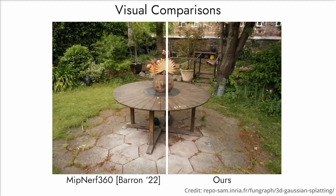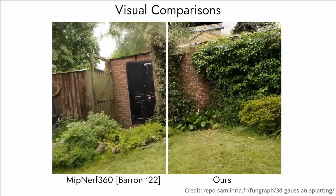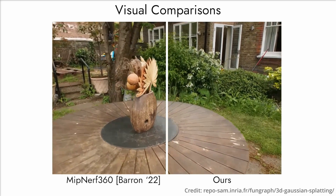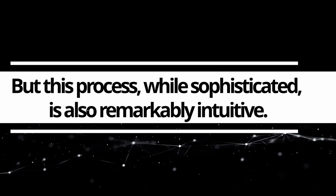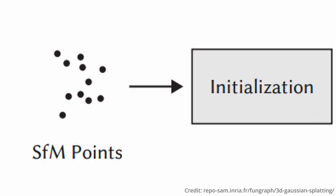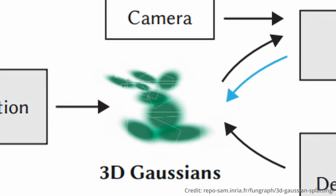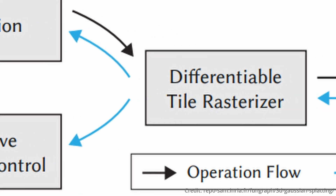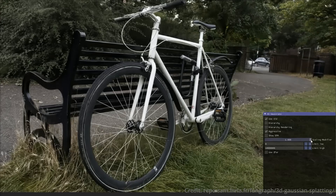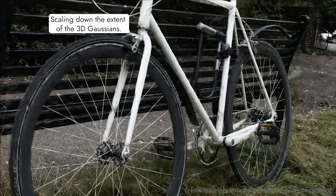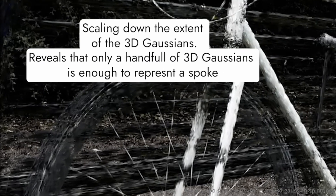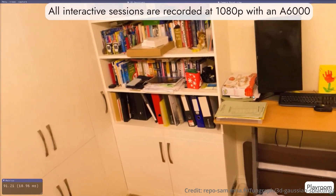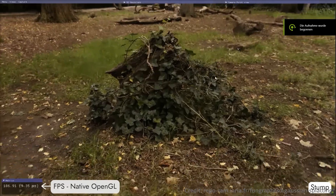With 3D Gaussian splats, gone are the traditional polygons or triangles used to delineate an object. Instead, we see a bunch of Gaussians — blurry 3D shapes — helping to create a much more vivid, lifelike representation of the scene. It all begins with sparse points derived during camera calibration, epitomizing the scene with 3D Gaussians. Employing the well-established structure-from-motion methodology, a 3D point cloud is extrapolated from a series of 2D snapshots. Each of these points then metamorphoses into a Gaussian. To elevate these results to top-tier quality, the model undergoes a training regimen.